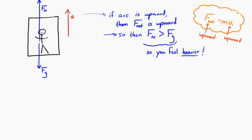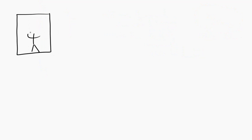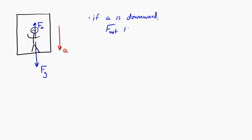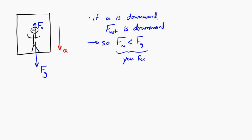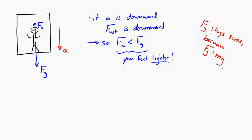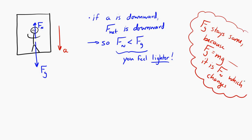Now imagine the elevator accelerates downward. If the elevator accelerates downward, the normal force must be smaller than the gravitational force, because by Newton's second law, if you're accelerating downward, the net force on you must be downward, so gravity has to exceed the normal force. The gravitational force doesn't change — it's only determined by your mass — but the normal force is what changes. So if the elevator accelerates downward, the normal force is smaller than usual, and you feel lighter.